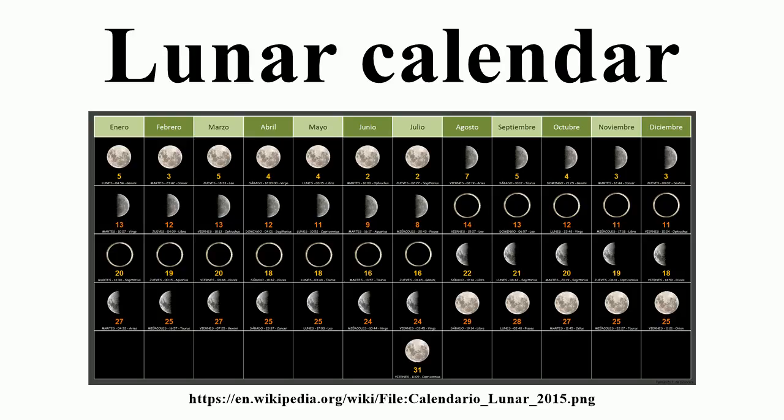The length of each lunar cycle varies slightly from the average value. In addition, observations are subject to uncertainty in weather conditions. Thus to avoid uncertainty about the calendar, there have been attempts to create fixed arithmetical rules to determine the start of each calendar month. The average length of the synodic month is 29.530589 days. Thus, it is convenient if months are in general alternately 29 and 30 days.